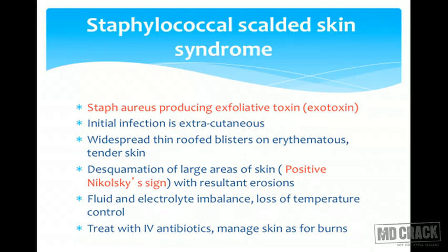Staphylococcal scalded skin syndrome is produced by Staphylococcus aureus, which releases an exfoliative toxin. The initial infection is generally extracutaneous — most patients present with sore throat. This is followed by release of the exfoliative toxin into the blood, causing widespread thin-roofed blisters on erythematous tender skin. Once these blisters rupture, there is widespread desquamation of large skin areas — this is positive Nikolsky's sign, where lateral pressure causes the skin to peel off. Complications include fluid and electrolyte imbalance and loss of temperature control. This is a medical emergency; the child needs admission, IV antibiotics, and skin managed as for burns.